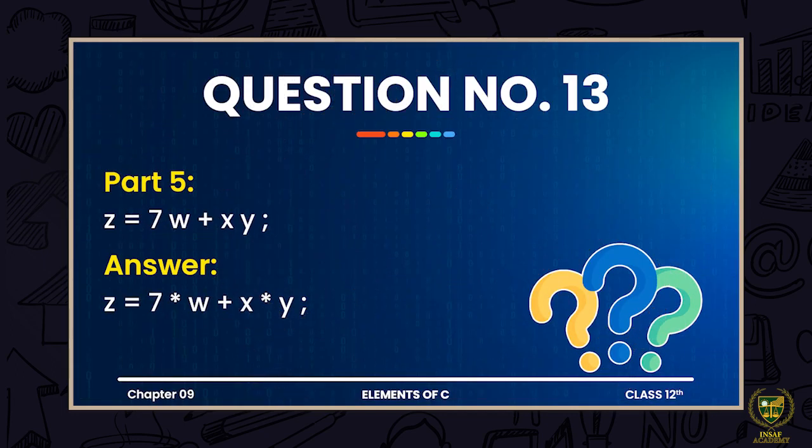The last expression is z = 7w + xy. Here also the multiplication signs that are obvious in mathematics are not explicit in the code. So you have to make it correct: z = 7 * w + x * y. You have to put the operators there, otherwise the compiler will not automatically know that you intend multiplication.